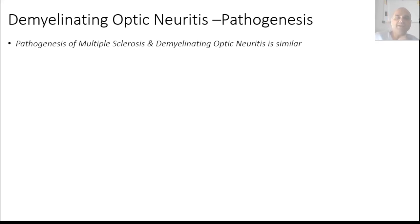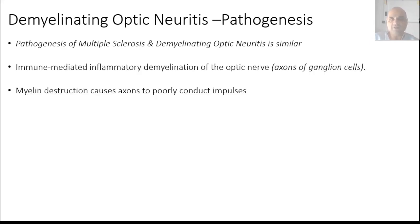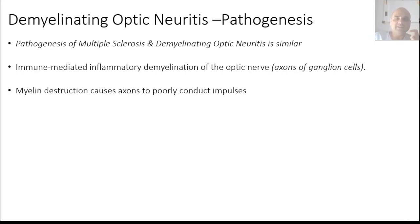The pathogenesis of multiple sclerosis and optic neuritis is similar — both are demyelinating disorders. What happens is an immune-mediated inflammatory demyelination of the optic nerve, specifically targeting the axons of ganglion cells. These axons exit the eye through the rim of the optic nerve and continue to the lateral geniculate body. Destruction of the myelin sheath around these axons causes poor conduction of neural impulses, resulting in the visual loss the patient experiences.